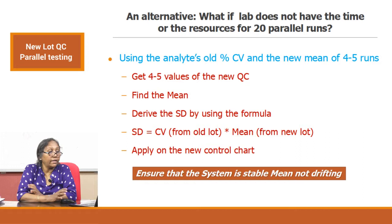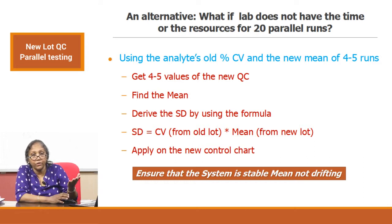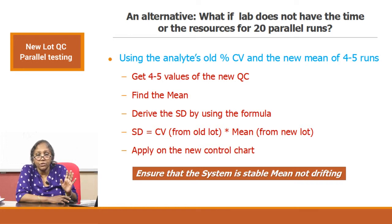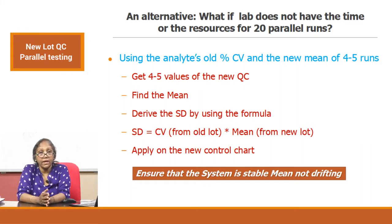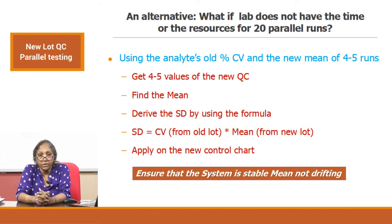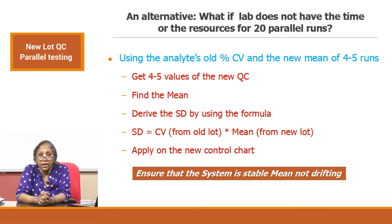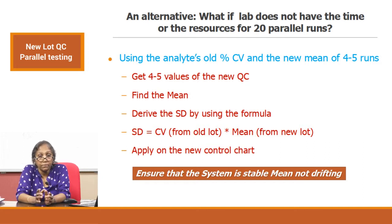Make sure the analytical system is stable. With only 4 or 5 runs to derive your mean, if there was any systematic error your mean will be totally wrong, giving you a wrong chart. To recap, there are two ways: collect 20 runs finding mean and SD, assuming 20 runs give a reasonable dispersion for a reliable standard deviation; or alternatively, under certain situations when you cannot do 20 runs, run it a maximum of 6 times, find the mean, and apply CV percent from the old lot to get a reasonable standard deviation.